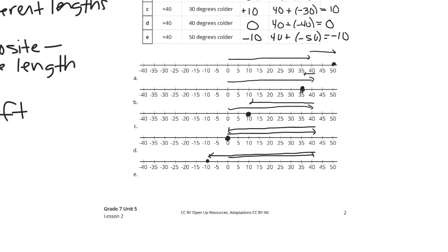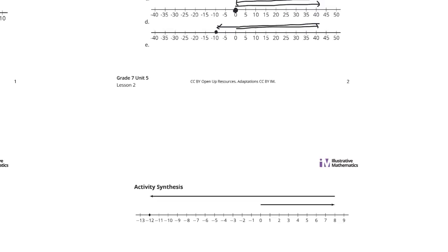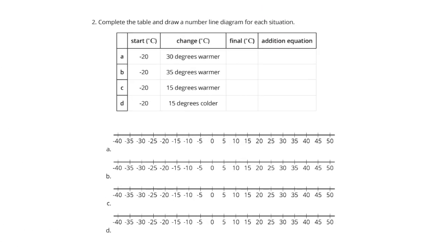And that's the first question. Now, there's more. Question 2, complete the table and draw a number line diagram for each situation. Now, instead of starting at a positive 40, we're starting at negative 20. We're going to be at negative 20. And getting 30 degrees warmer, we're adding 30. And what will that equal? Let's go back to negative 20. And adding 30, let's see, that would be adding 20 and then 10 more gets us to a positive 10.